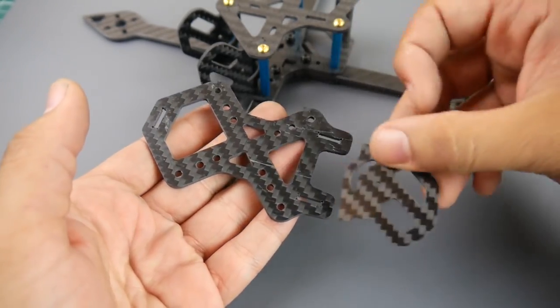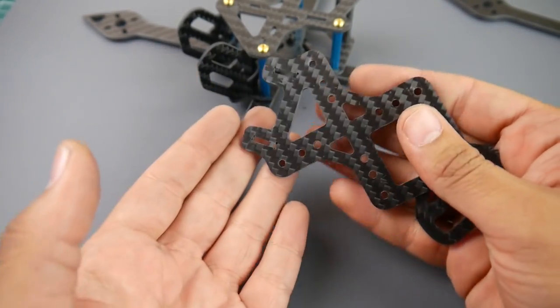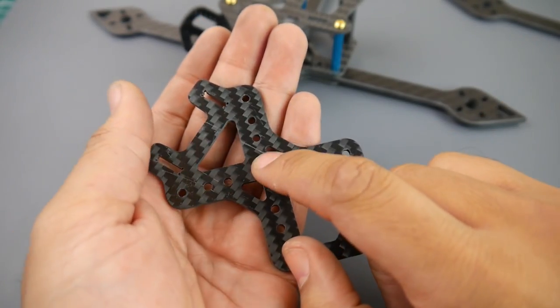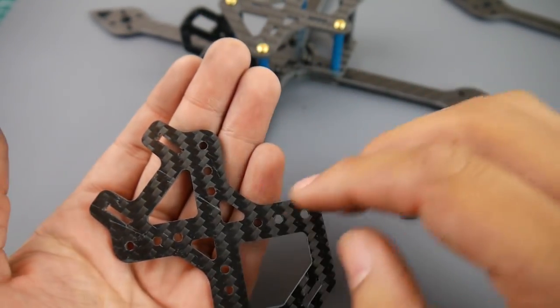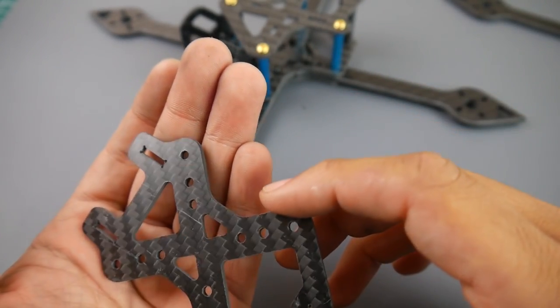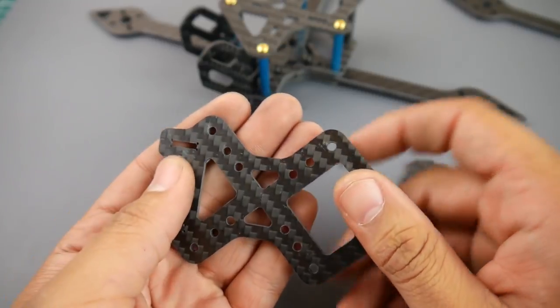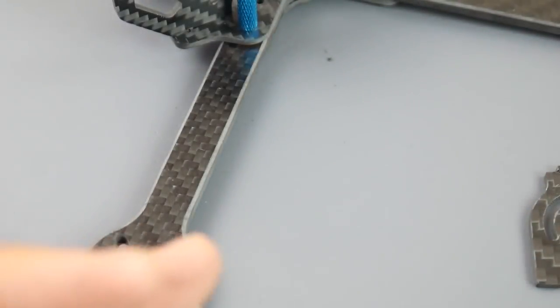This is why you see GepRC vacuum sealing every little component so they don't have this issue. When you get your quadcopter or frame that you paid for, you're not going to get these nasty scratches. There's a lot of delamination and threading in some of the cuts. Not really hardcore delamination, but it's on the exit holes.